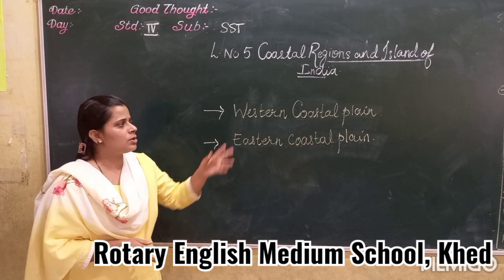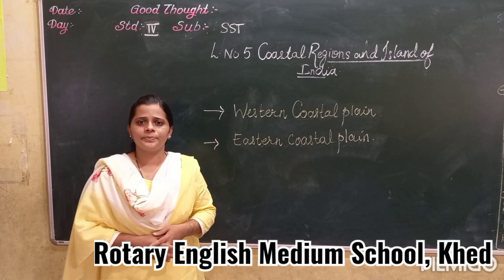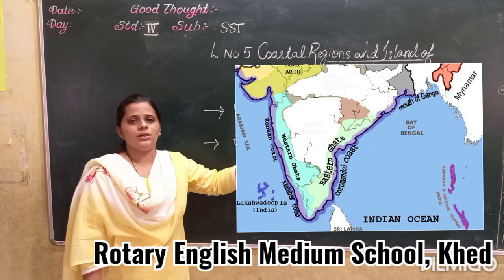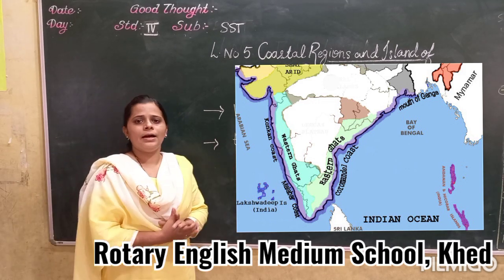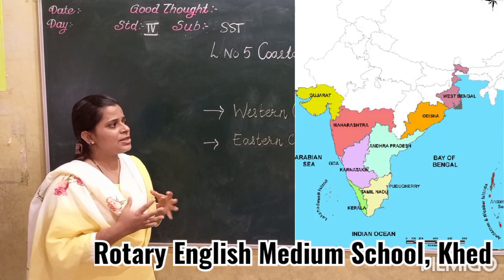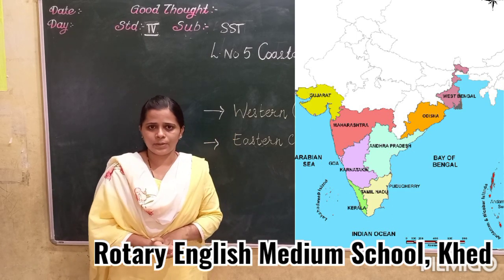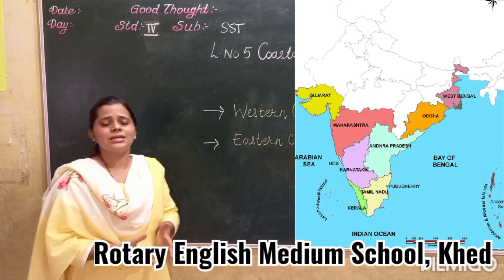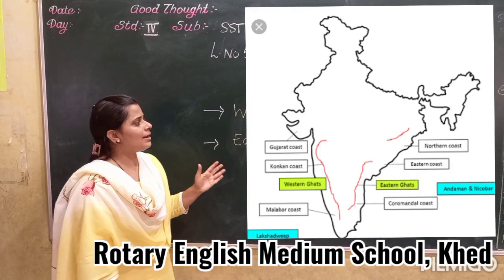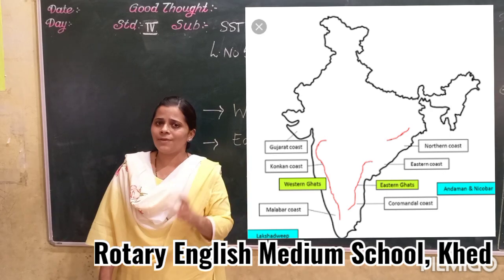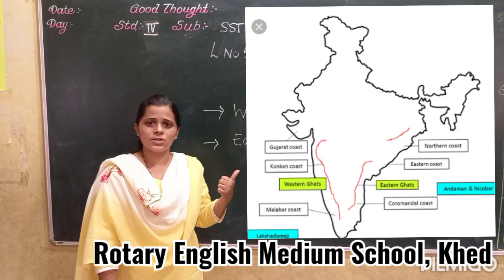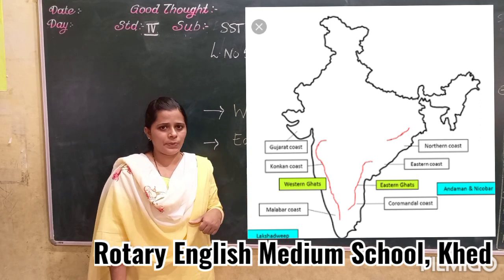The western coastal plain lies between the Western Ghats and the Arabian Sea. It stretches from Gujarat to Kerala, and its width is 65 km. The western coastal plain is divided into three important parts: the Gujarat coast, the Konkan coast, and the Malabar coast.